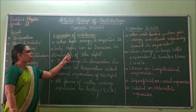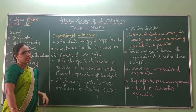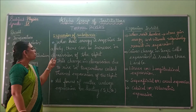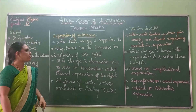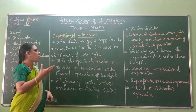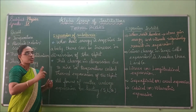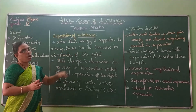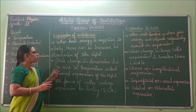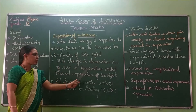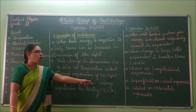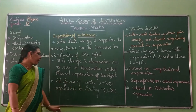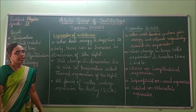Next, we are going to see the expansion of substances. This we have seen already, so once again we will recall the content. What is called expansion of substances? When heat energy is supplied to any object, there is an increase in the expansion of the object due to heating. That is called expansion of substances. This change in dimension due to rising temperature is called thermal expansion. All forms of matter — solid, liquid, and gas — undergo expansion due to heating.